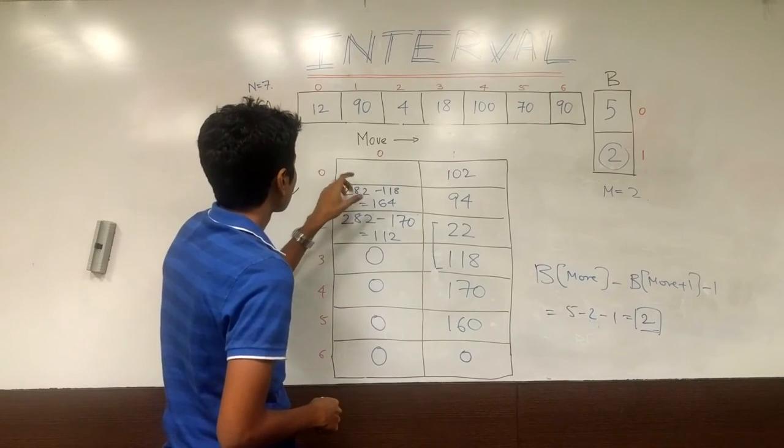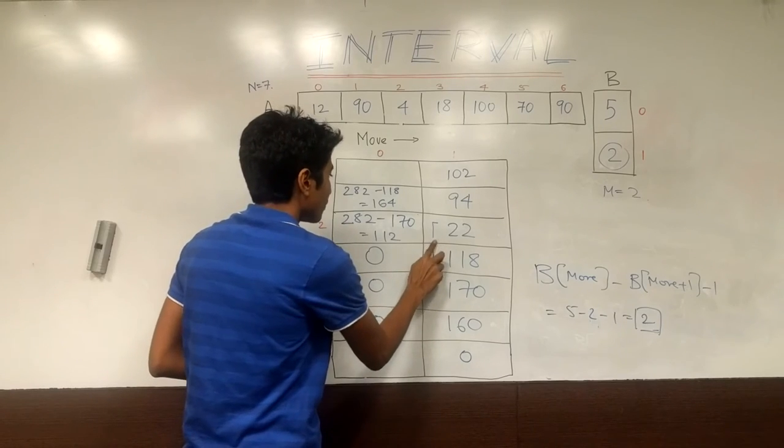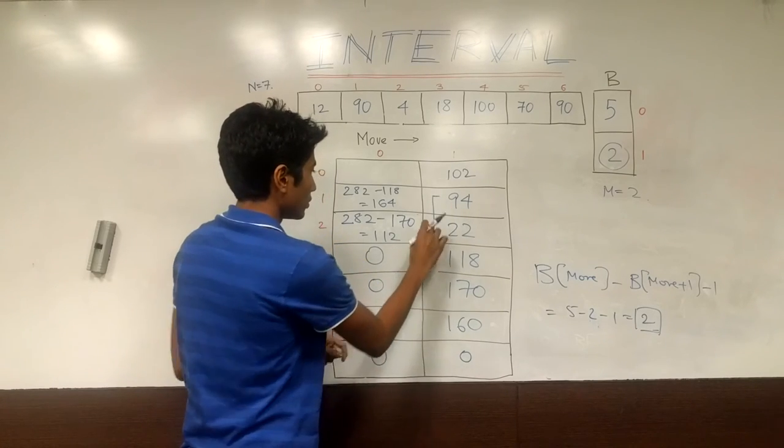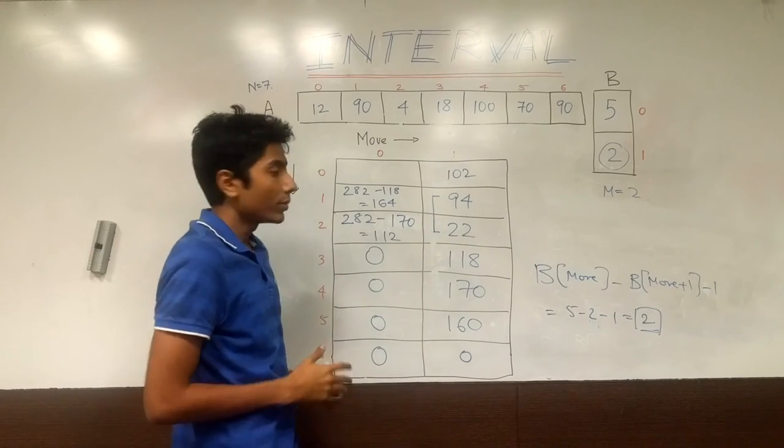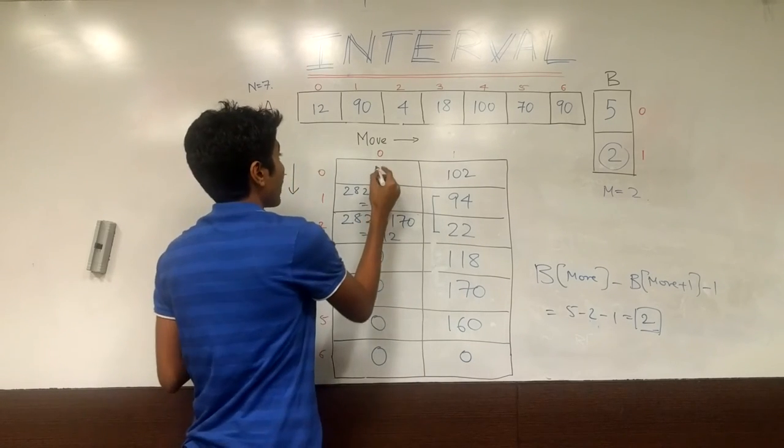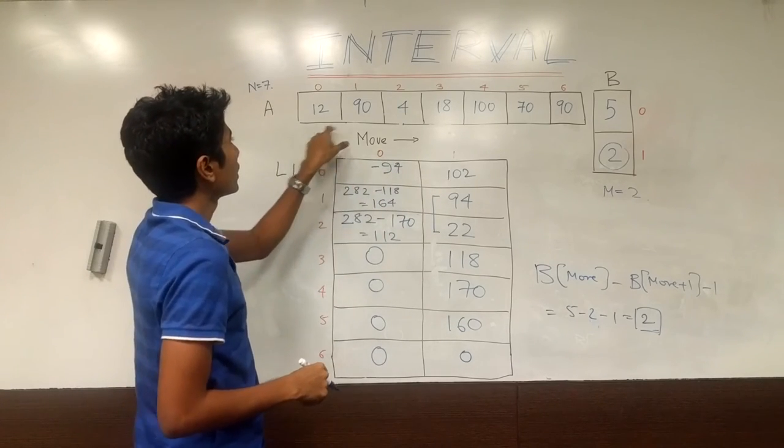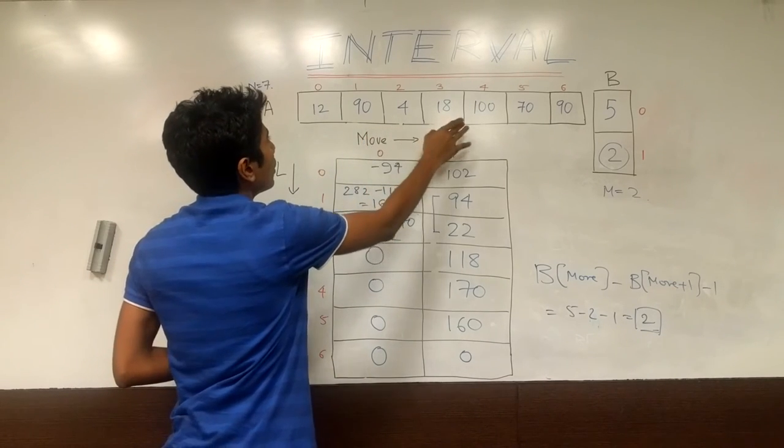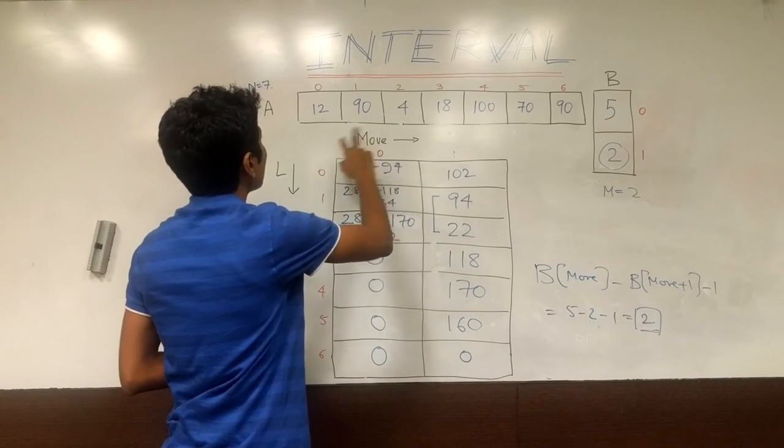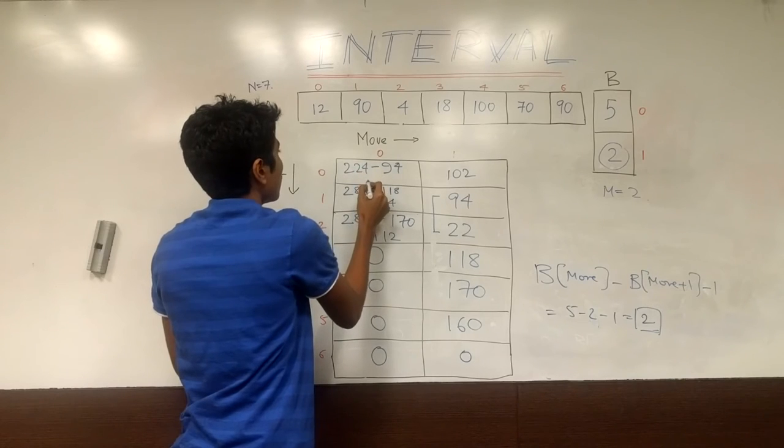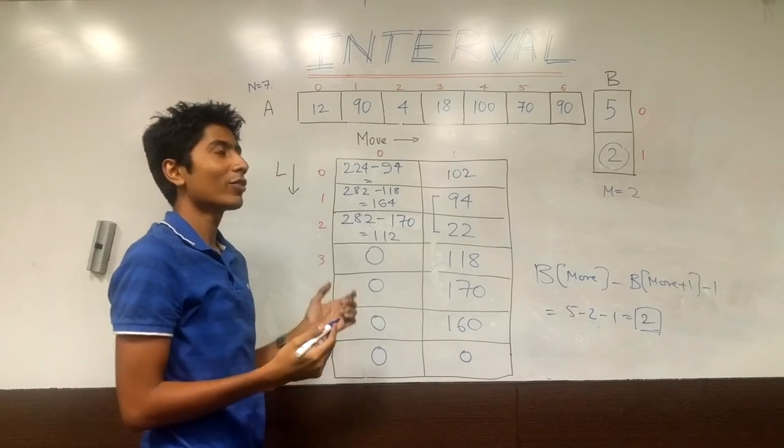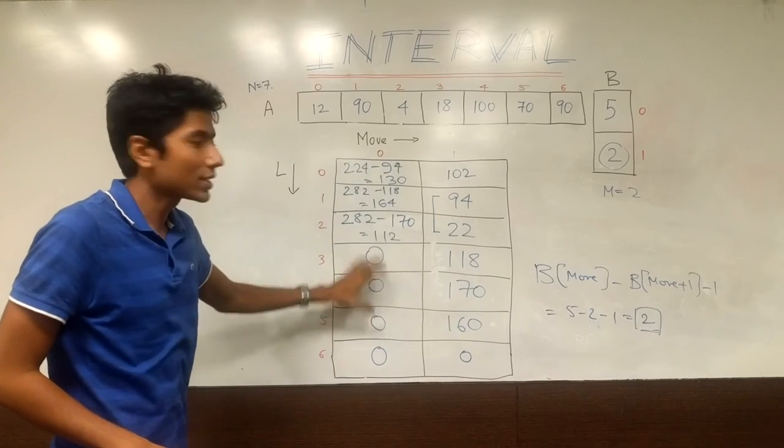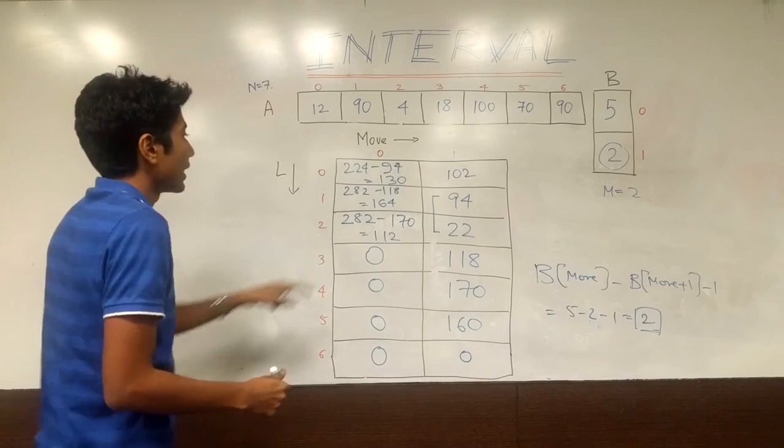For the third one which is at index 0, your sliding window again slides up. Starts from here. Goes all the way up here. Cool. 94 and 22 are your elements. The maximum is 94. So you have minus 94 here. And your payoff is the first 5 elements. So that is equal to 190, 200 plus 224, 130 is what it is coming out to be. And to get the final answer we take the maximum among all the elements in the very first row, in the very first column. So that is 164.